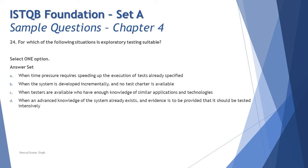Option A says: when time pressure requires speeding up the execution of tests already specified. This looks tricky because it mentions time pressure leading to exploratory testing, but it's absolutely not correct. Exploratory testing is not suitable to speed up tests. It applies when you cannot run all test cases formally and don't have enough bandwidth to design them properly. It's not that any time you want to speed up your work you go informal.